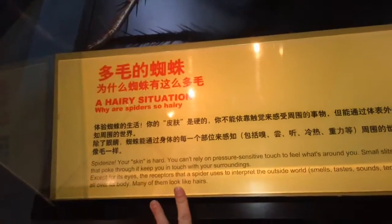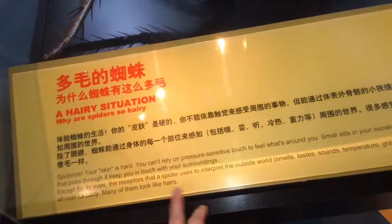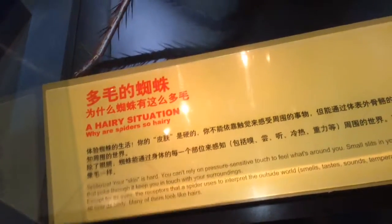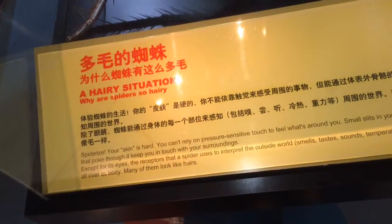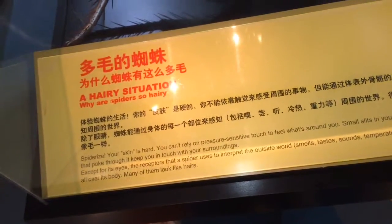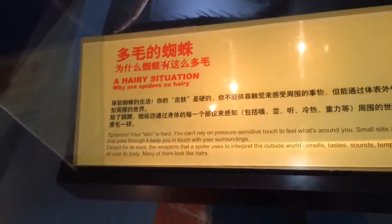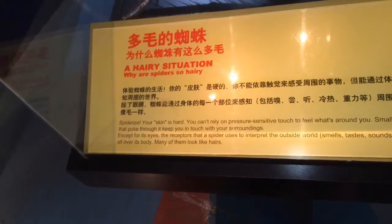Your skin's hard — you can't rely on pressure-sensitive touch to feel what's around you. Small slits in your exoskeleton and hairs that poke through it keep you in touch with your surroundings. Receptors the spider uses to sense the outside world — smell, taste, sound, temperature, gravity — are distributed all over the body, except for the eyes.